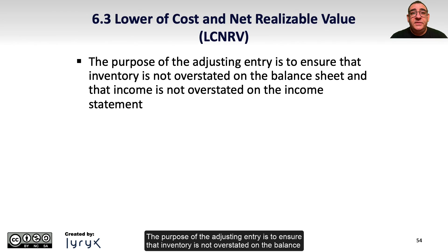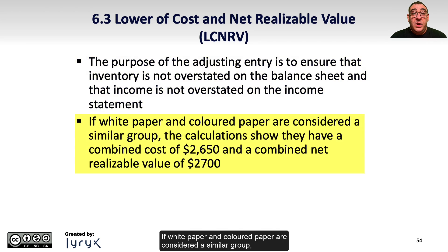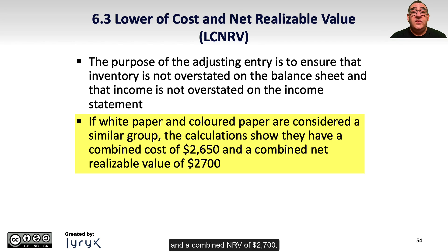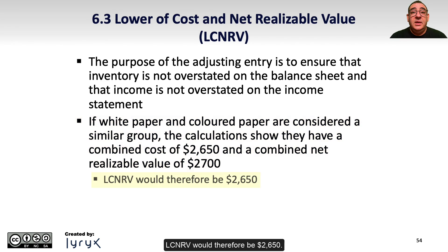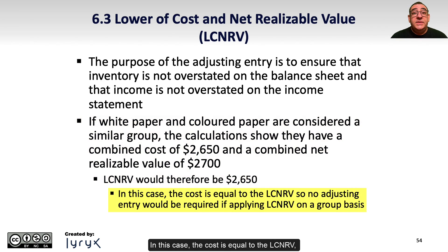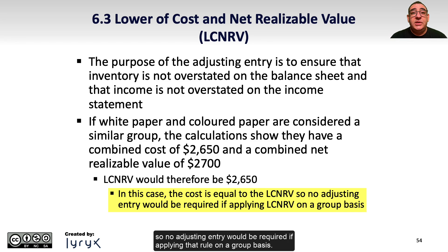The purpose of the adjusting entry is to ensure that inventory is not overstated on the balance sheet and that income is not overstated on the income statement. If white paper and colored paper are considered a similar group, the calculations show they have a combined value of $2,650 and a combined NRV of $2,700. LCNRV would therefore be $2,650. In this case, the cost is equal to the LCNRV, so no adjusting entry would be required if applying the rule on a group basis.